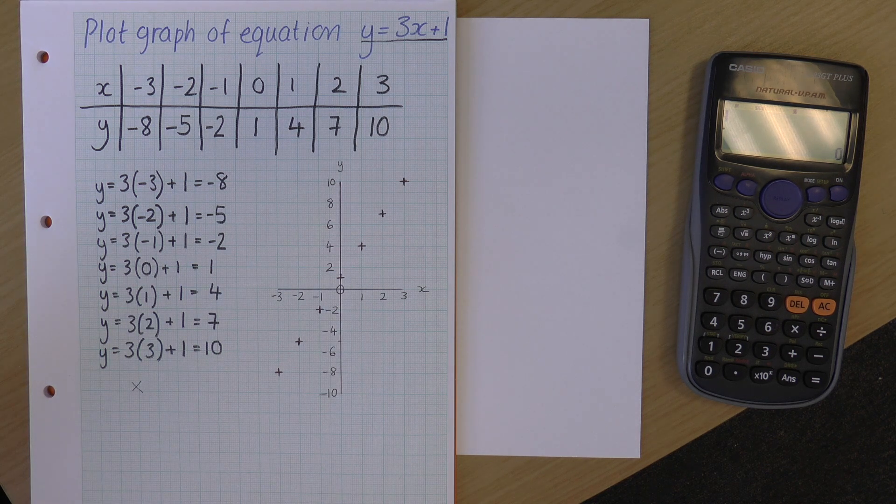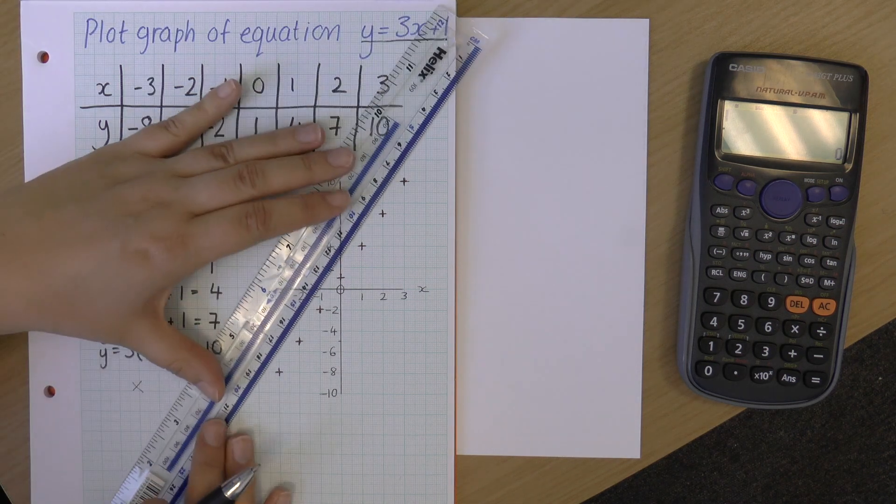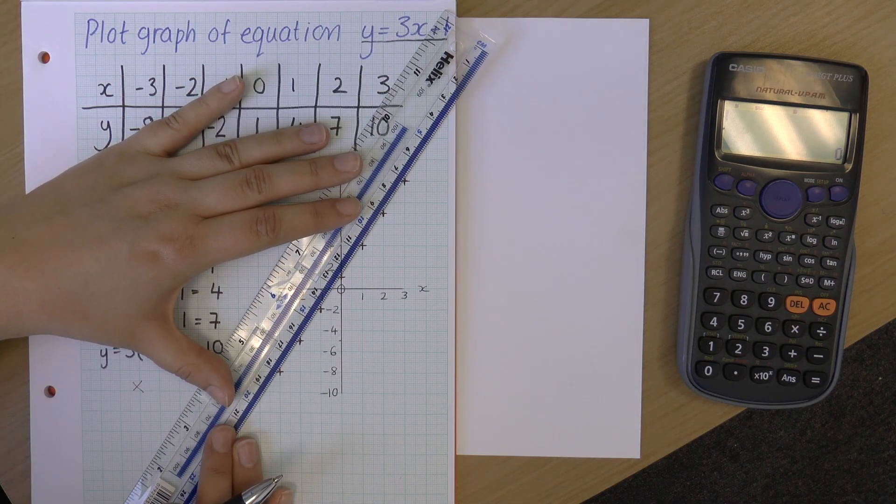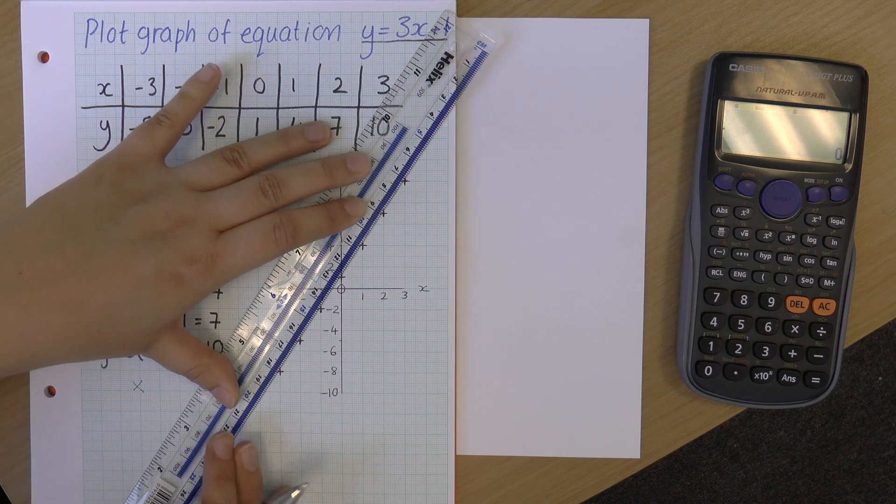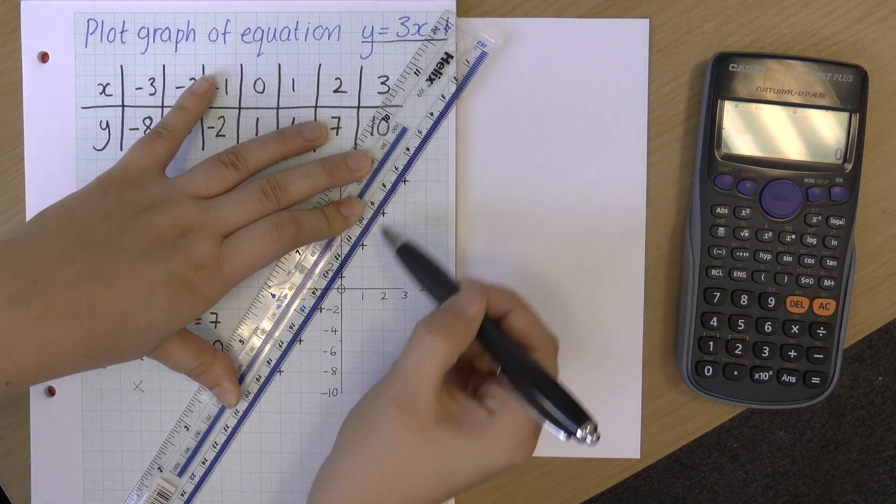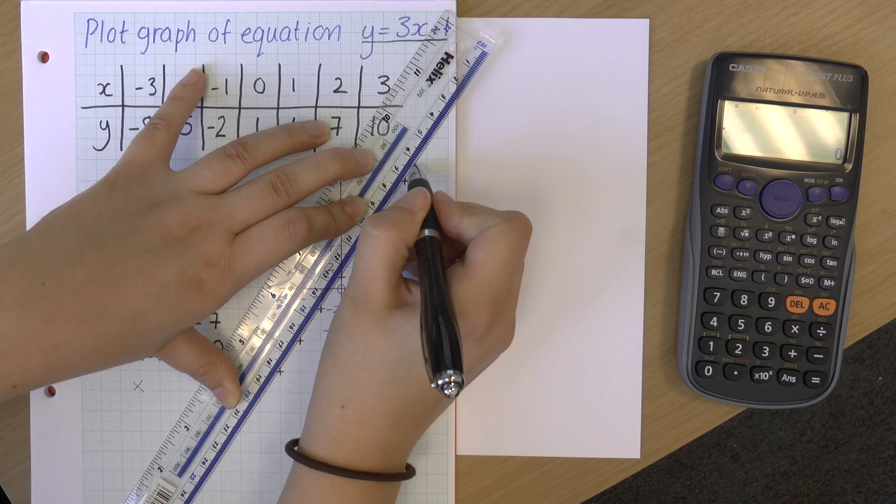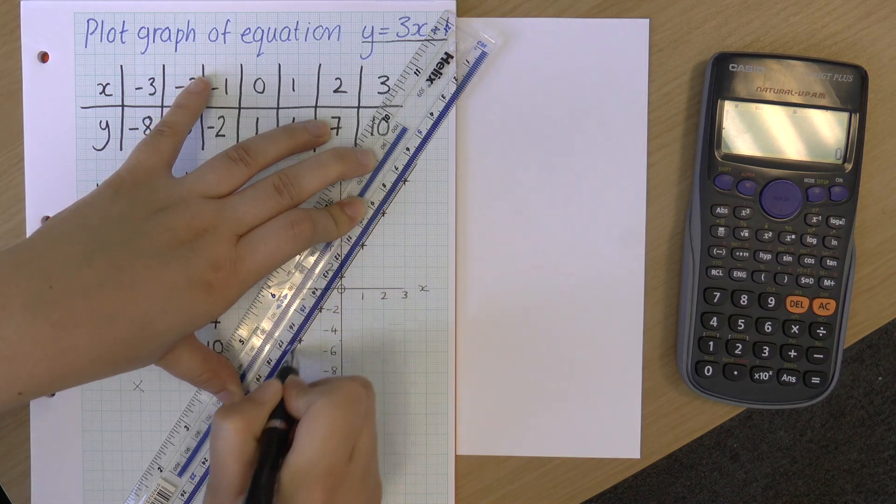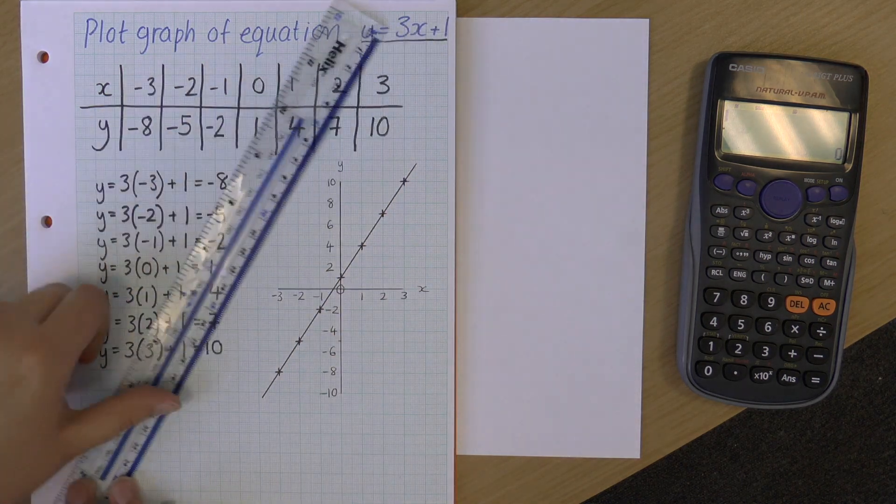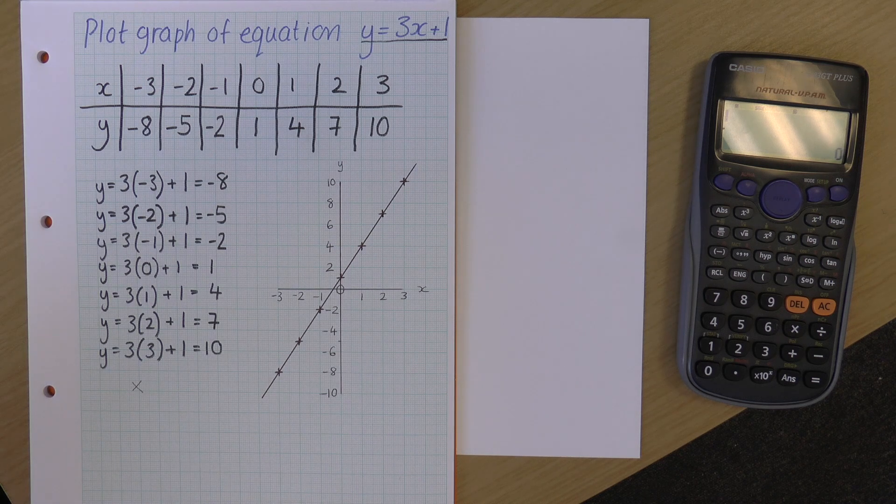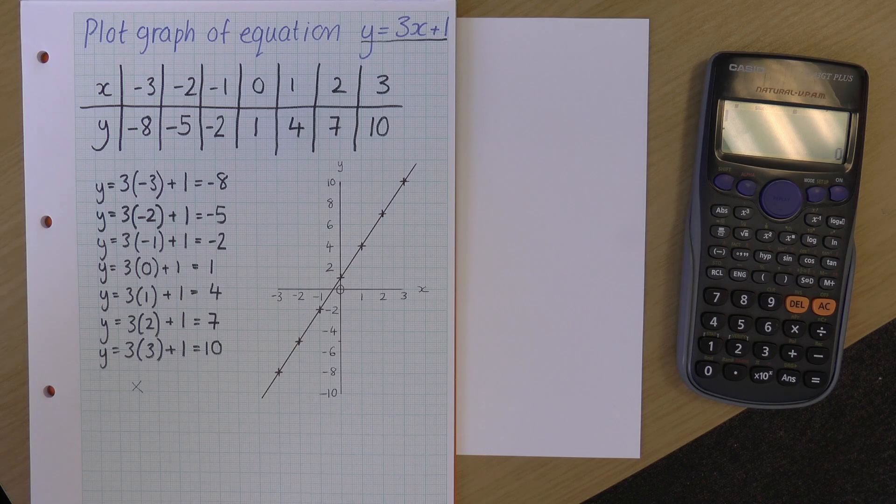Now I want to draw a line of best fit. So I'm going to get my ruler, and I want to draw a line between or like through the centre point of all of these. There we go. Lovely. So that's my line of best fit, and that is the graph of y equals 3x plus 1.